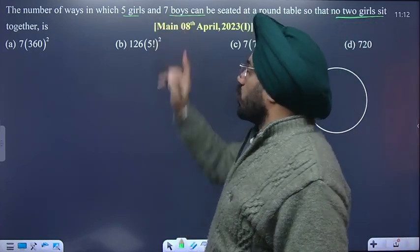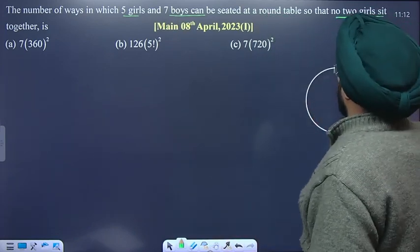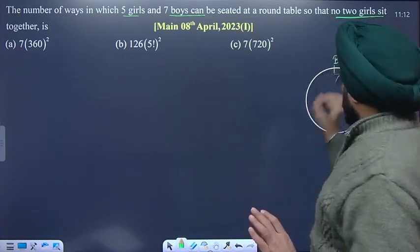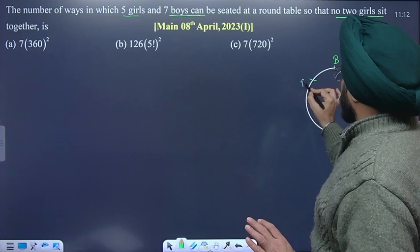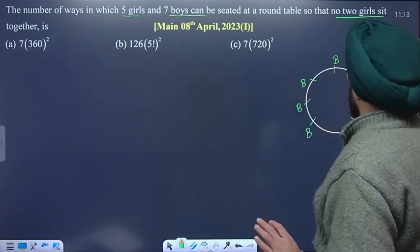There are no conditions on boys, only on girls. So first of all, you will place boys. We have seven boys. We will fix one boy, then arrange the remaining six boys.